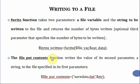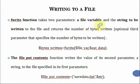We'll go to the next topic: writing to a file. We've used the fopen function to open a file. Now to write into that file, we can use a function called fwrite, which writes data into the file. You can specify the length, and until it finishes that length or reaches the end of the file, it will write the data. It takes two parameters: the file variable of the opened file, and the string to be written.